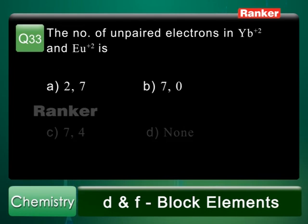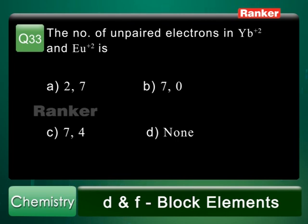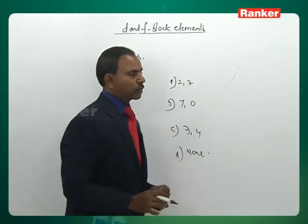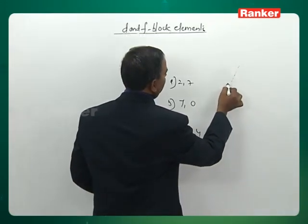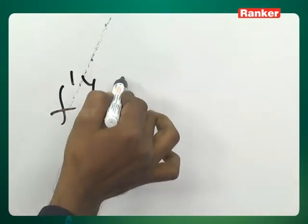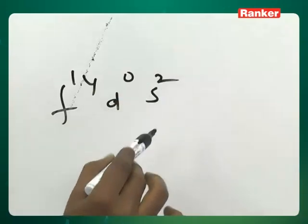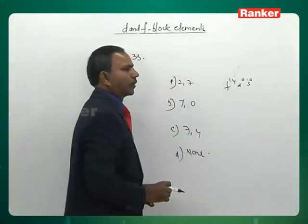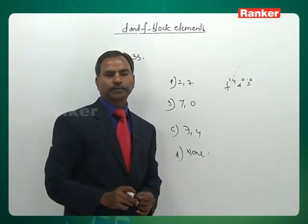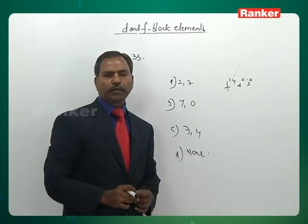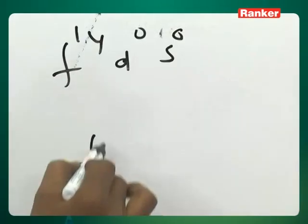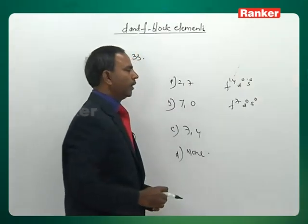Question number 33: the number of unpaired electrons in Yb²⁺. Options are: A) 2 and 7, B) 7 and 0, C) 7 and 4, D) none. For Yb²⁺, the electronic configuration is 4f¹⁴, d⁰, s⁰. Coming to Yb²⁺, it is 4f⁷, d⁰, s⁰ — wait, let me reconsider. For Yb²⁺ the configuration gives 0 unpaired electrons in one case and 7 unpaired electrons (f⁷) in another.